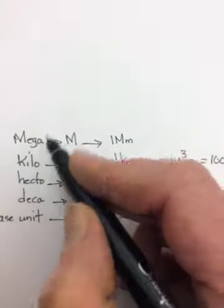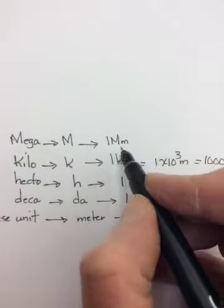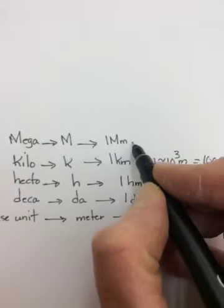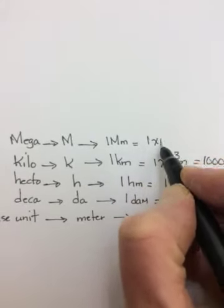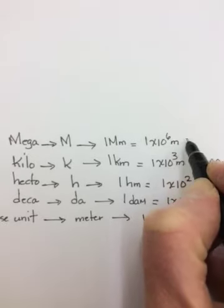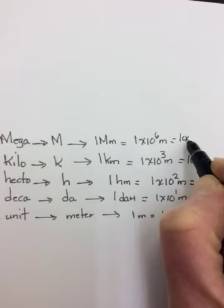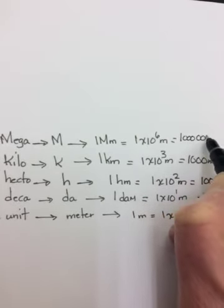Mega is a capital M. So 1 megameter would be a capital M, a small m. And it's equal to 1 times 10 to the 6 meters, in other words, equal to a million meters.